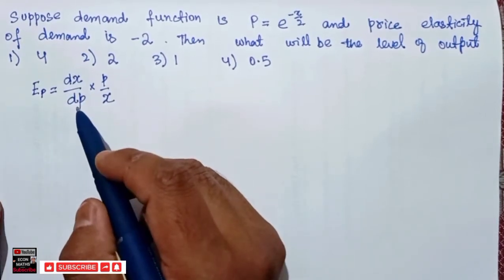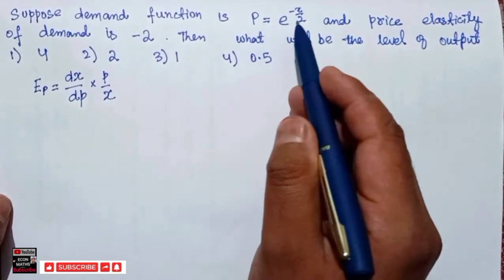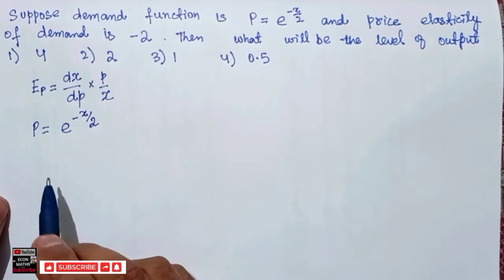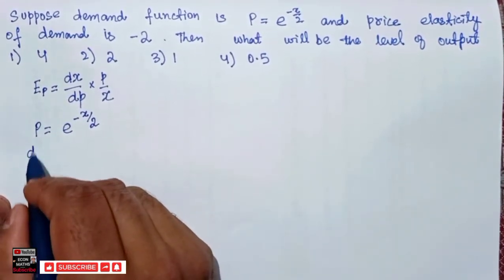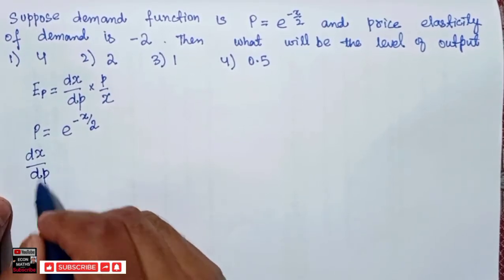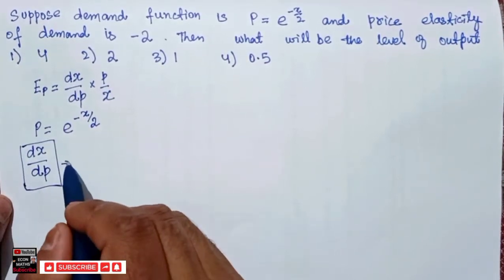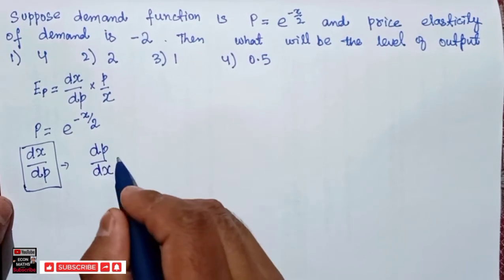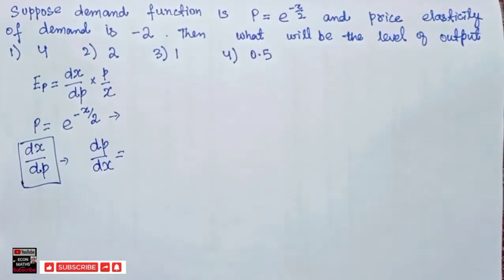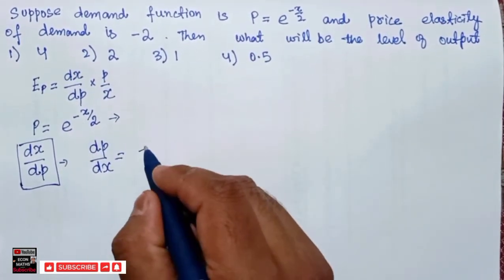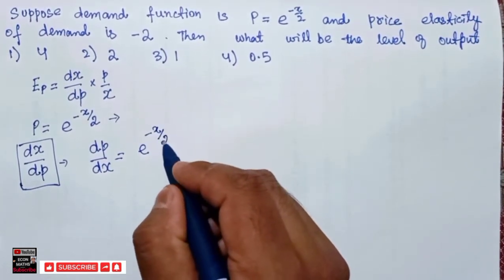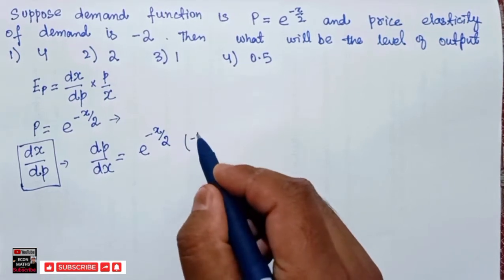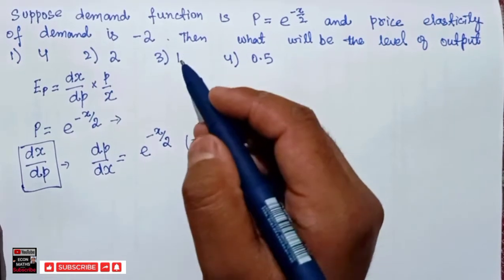First of all, we need to find dx divided by dp. We take the price function p equal to e to the power minus x divided by 2, and we cannot directly find dx/dp, so we will first find dp divided by dx. Differentiating with respect to x gives us e to the power minus x divided by 2 times the derivative of minus x divided by 2.